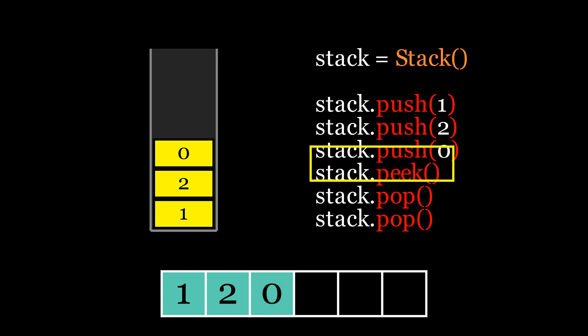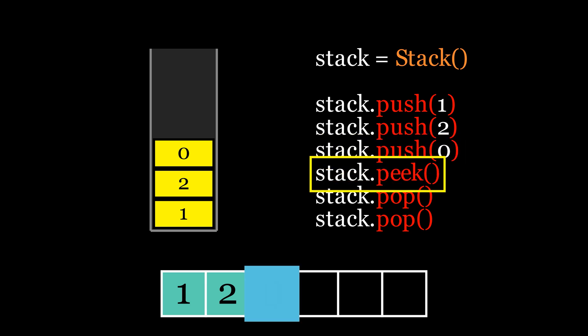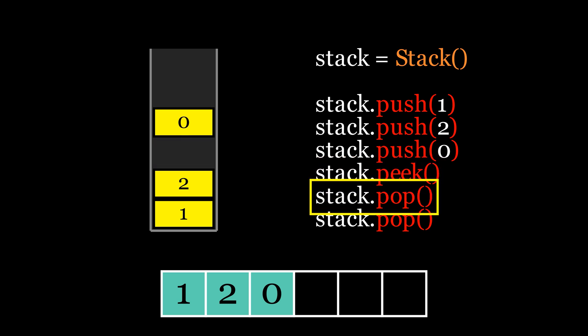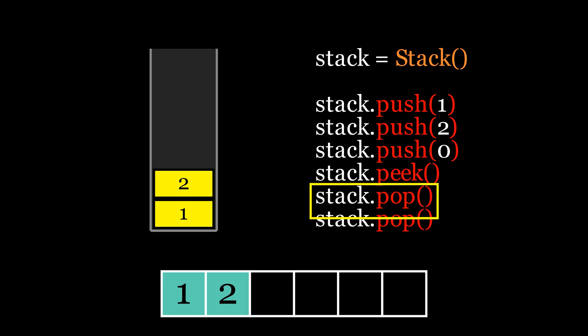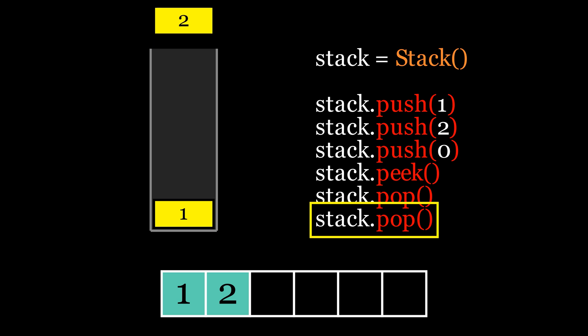The peek operation will simply return the top element of the stack, which corresponds to the last element of the array, also in constant time. Finally, removing an element involves deleting the last element from the array, which is another constant time operation.